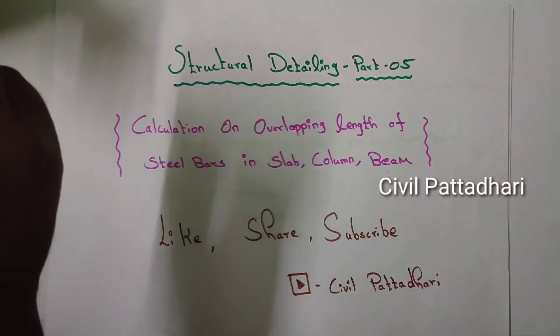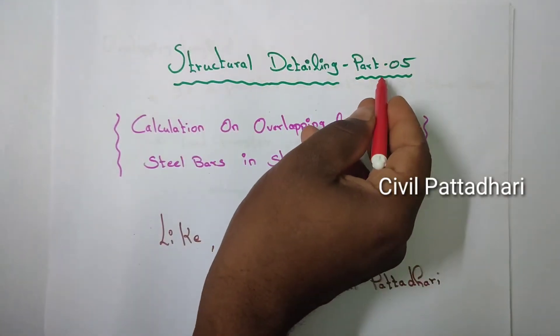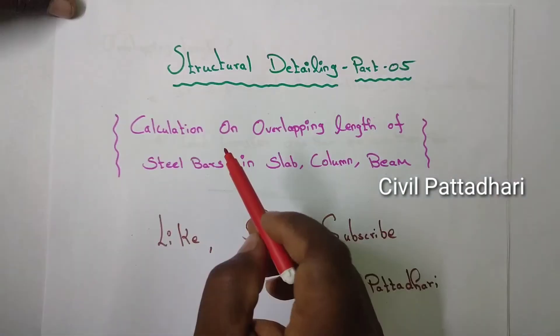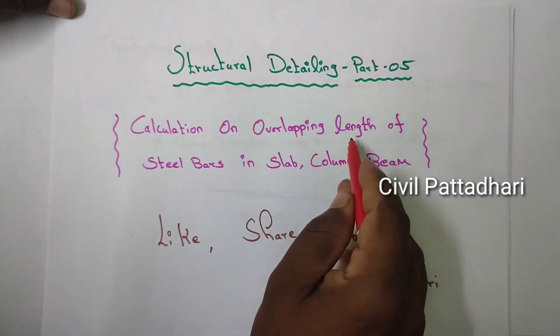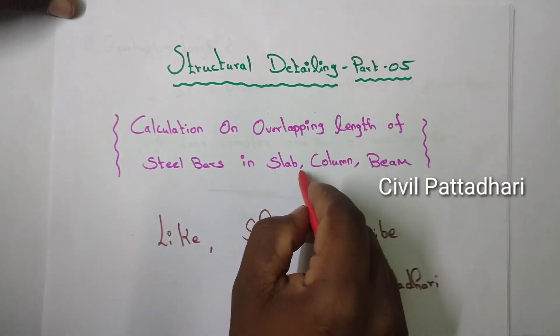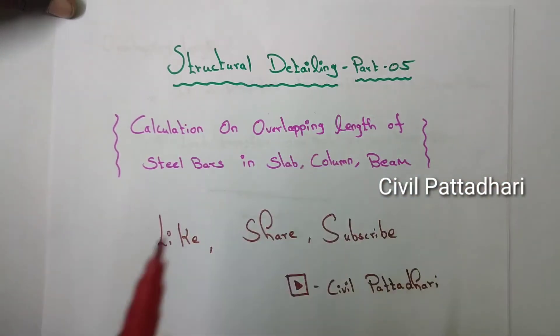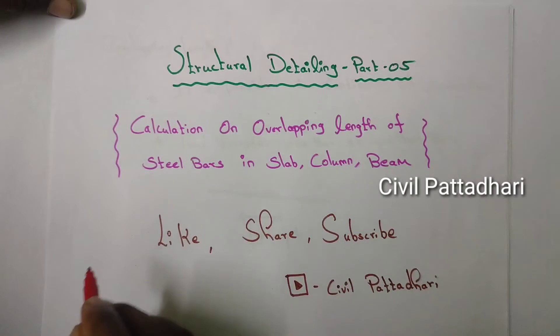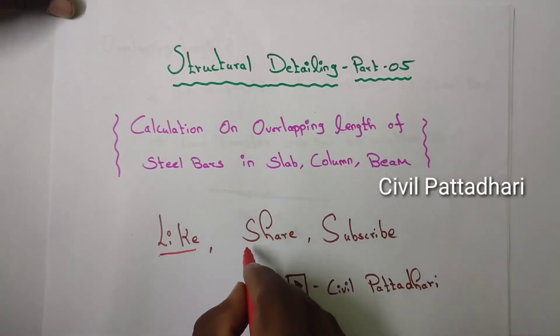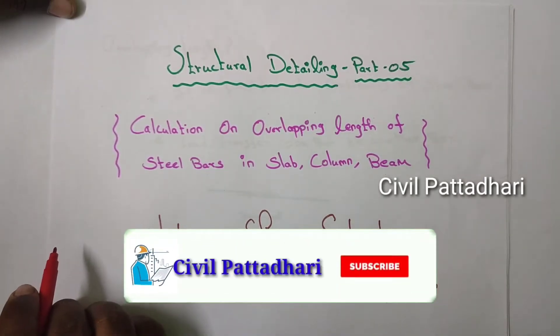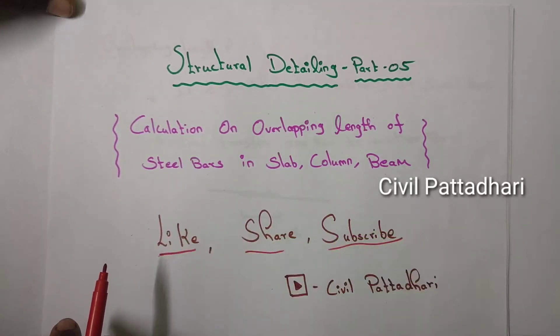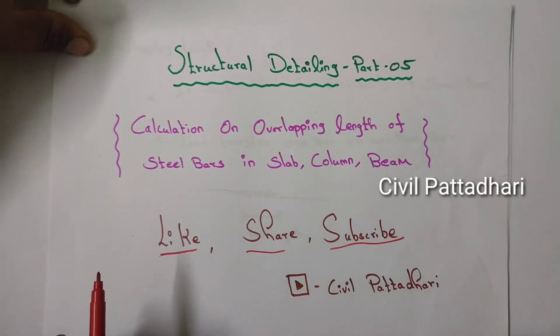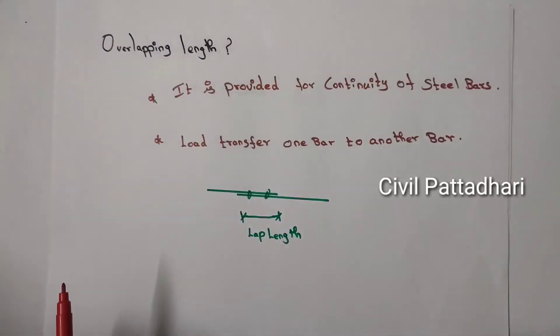Hello guys, welcome back to my channel. Today it is part 5 of the structural detailing video. In this video we are going to calculate the overlapping length of steel bars in slab, column, and beams. Before entering into the video, please like my video, share my video, subscribe to my channel, the name of Civil Pattadhari, and click the bell icon for civil related videos. Let's enter into the video.